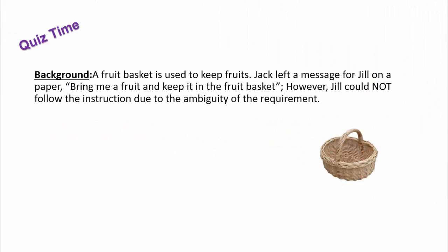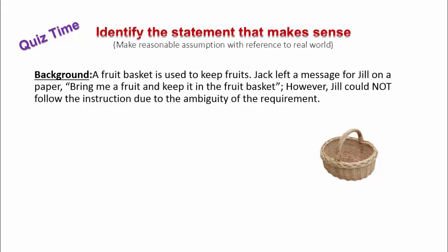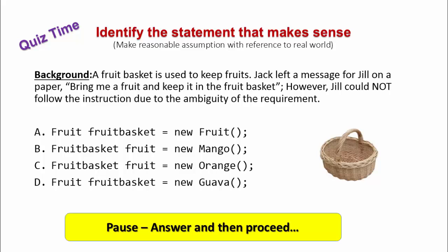Quiz time. Please listen this carefully. A fruit basket is used to keep fruits. Jack left a message for Jill on a paper. Please bring me a fruit and keep it in fruit basket. However, Jill could not follow the order due to ambiguous request. In order to programmatically model this situation, four statements are written. Identify the statement that makes sense. You may make reasonable assumption with reference to the real world. Please pause, answer and then proceed.